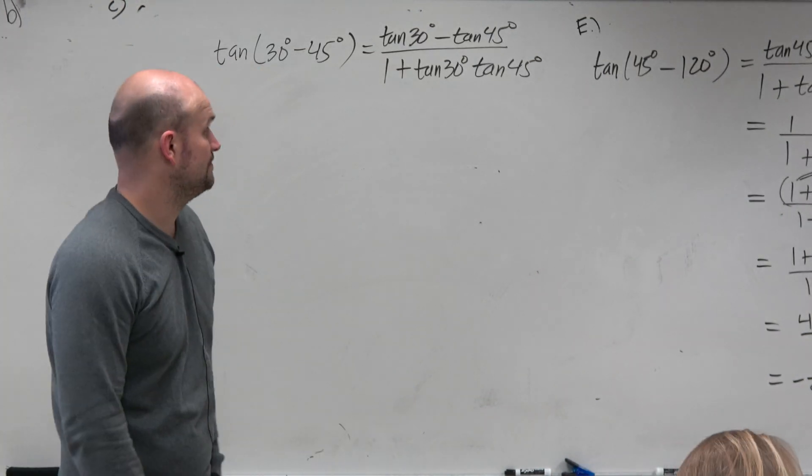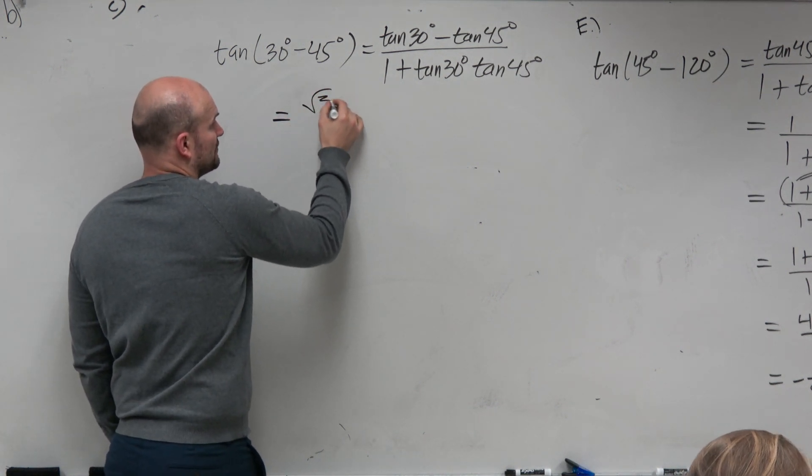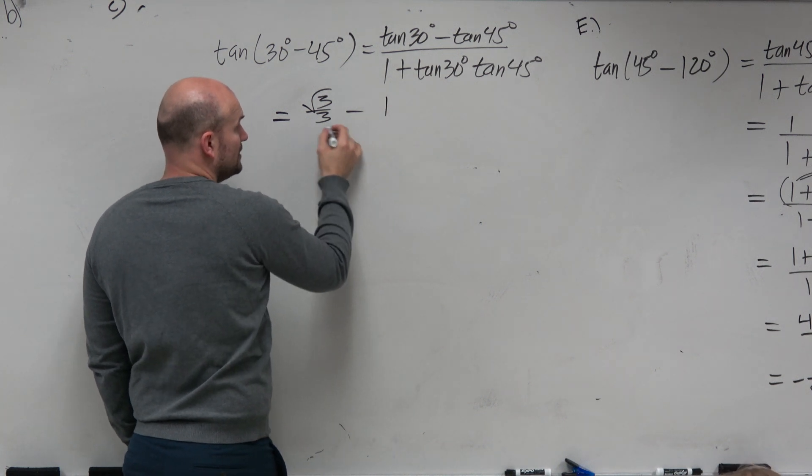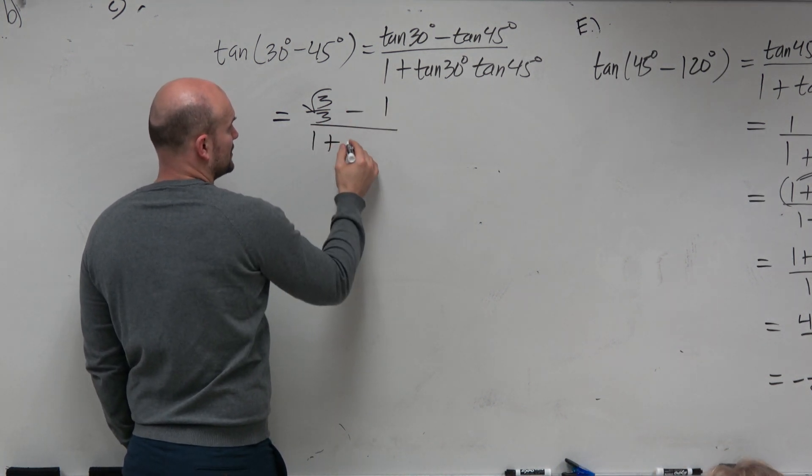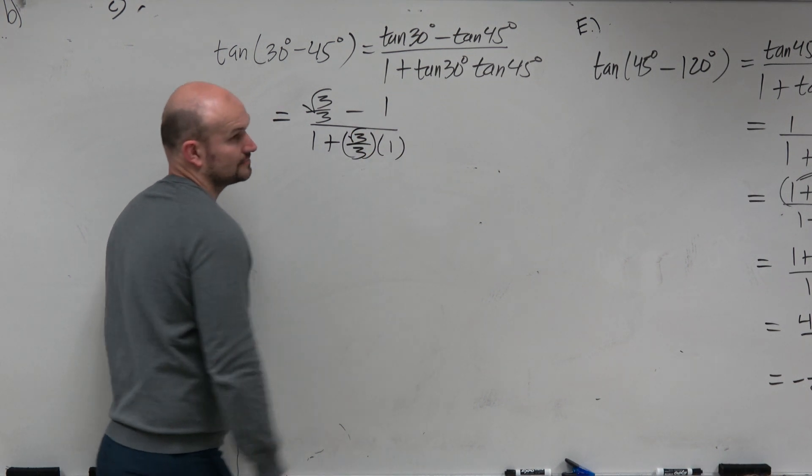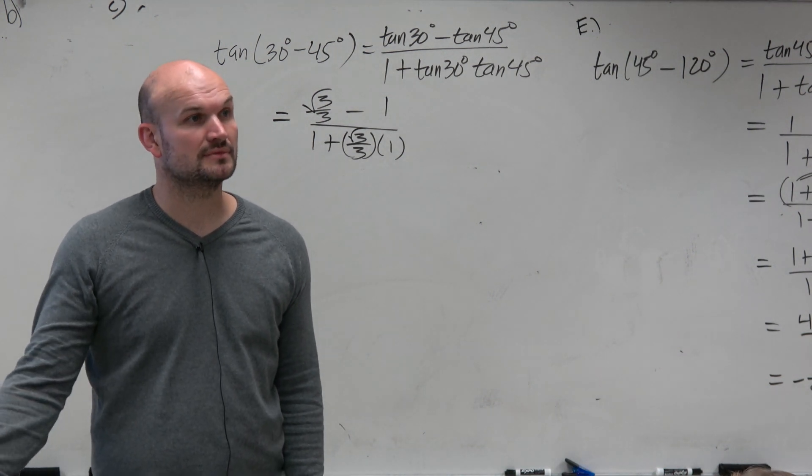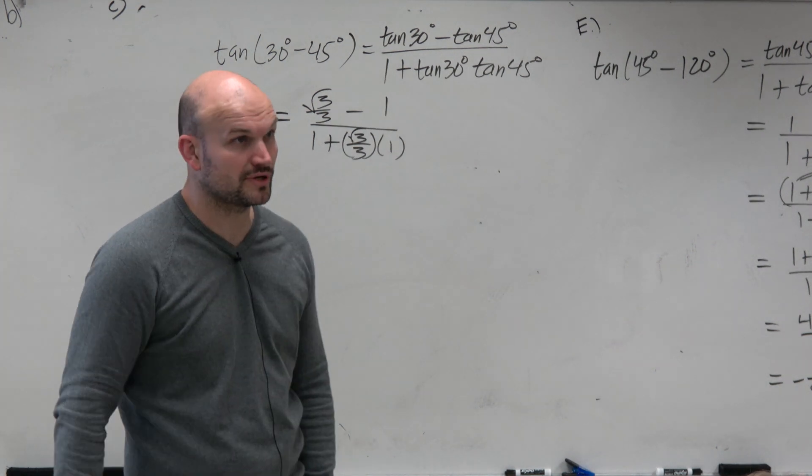Now it just comes into evaluating. So again, the tangent of 30 degrees is the square root of 3 over 3 minus tangent of 45 degrees is 1 all over 1 plus tangent of 30 degrees of the square root of 3 over 3 times 1. So I'm just using the unit circle. And again, I took the y-coordinate over the x-coordinate, and that's how I got square root of 3 over 3.